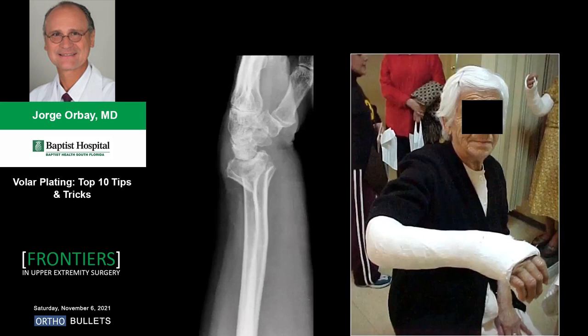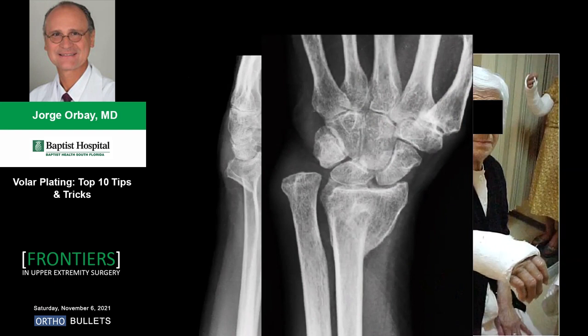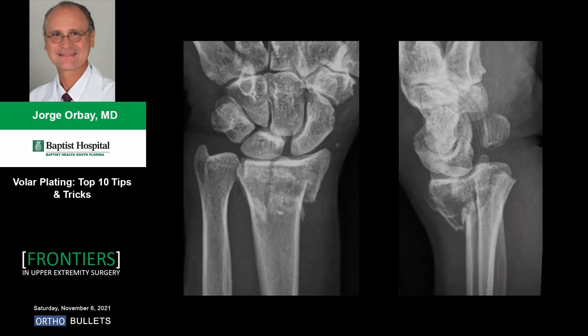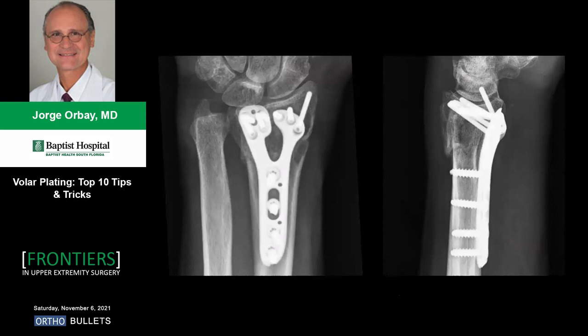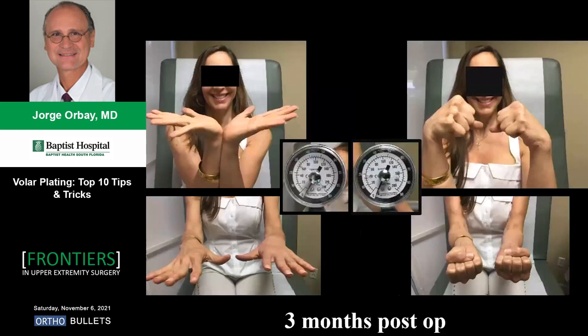We must indicate our procedures correctly. Elderly patients can tolerate more deformity up to a limit, but young active patients require anatomical reduction of the joint surface. This can be easily achieved with a volar plate provided proper technique is utilized, and these patients do exceedingly well — by three months they're back to full activity.